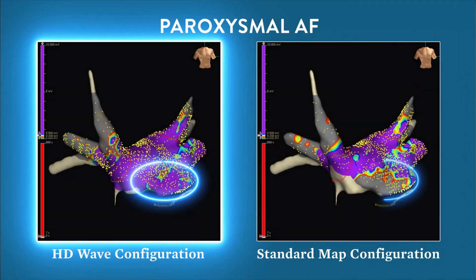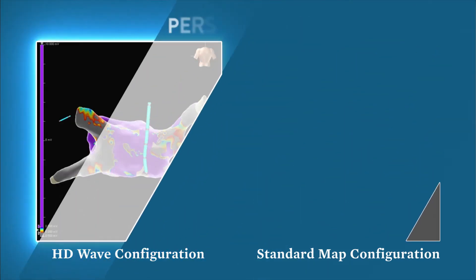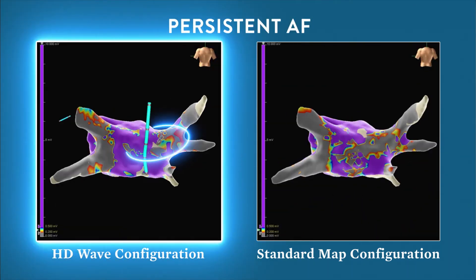Note the difference in voltage measured at the septum: on the standard configuration map, dense scar is identified, while HD wave identifies relatively healthy tissue. A similar situation is found on the posterior wall of this atrial map — the standard configuration identifies scar, while HD wave reveals relatively healthy tissue.